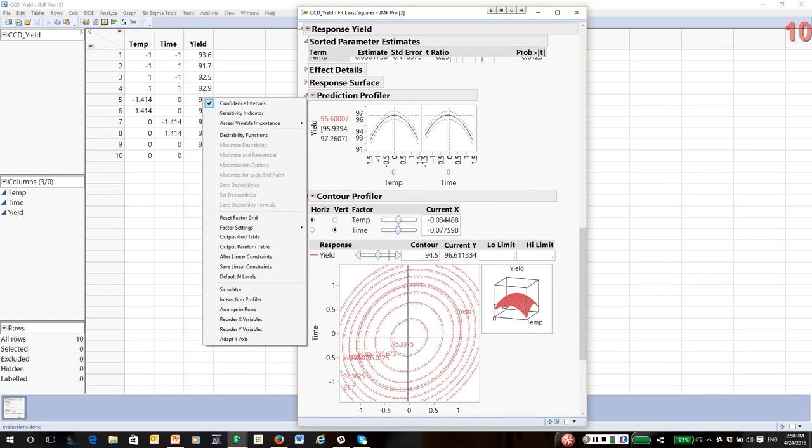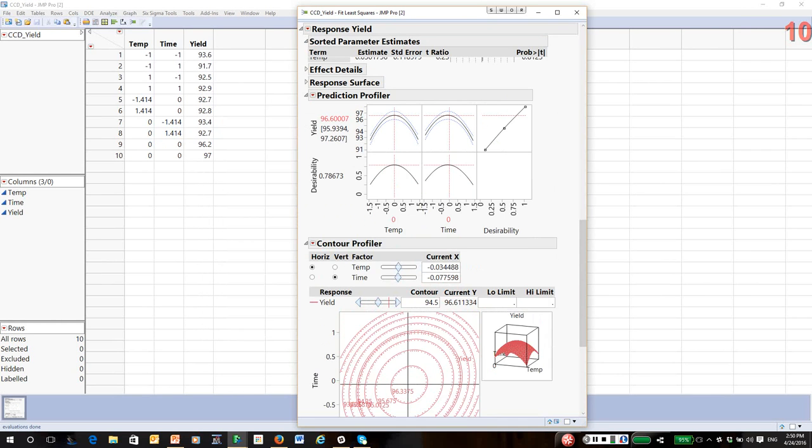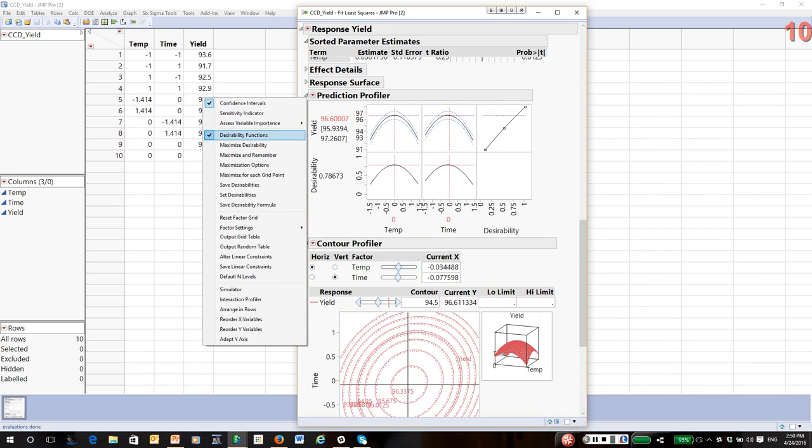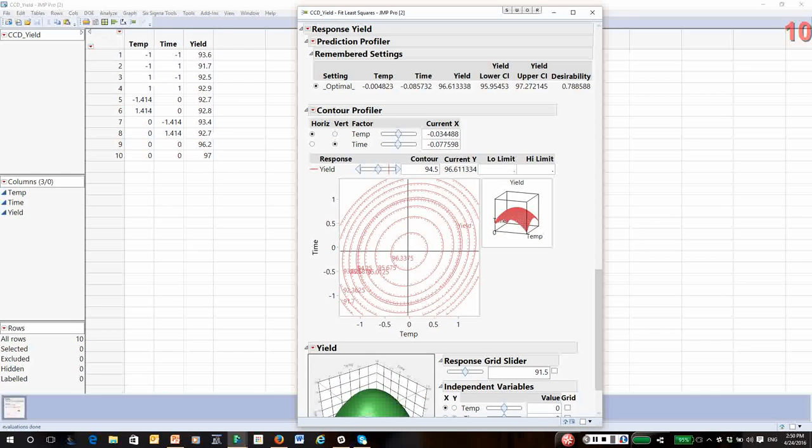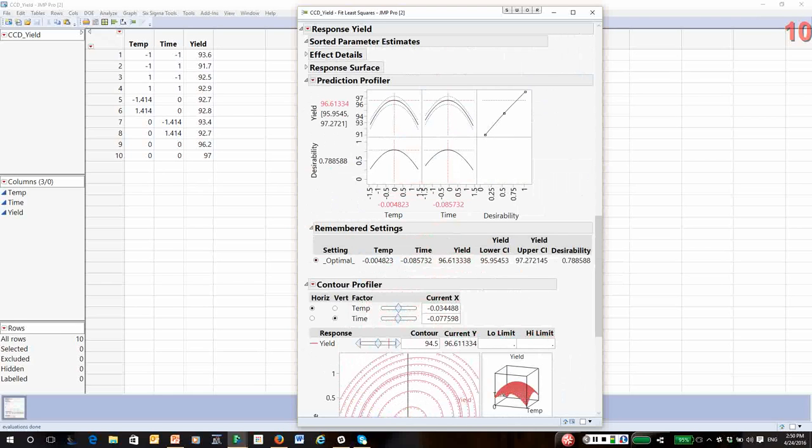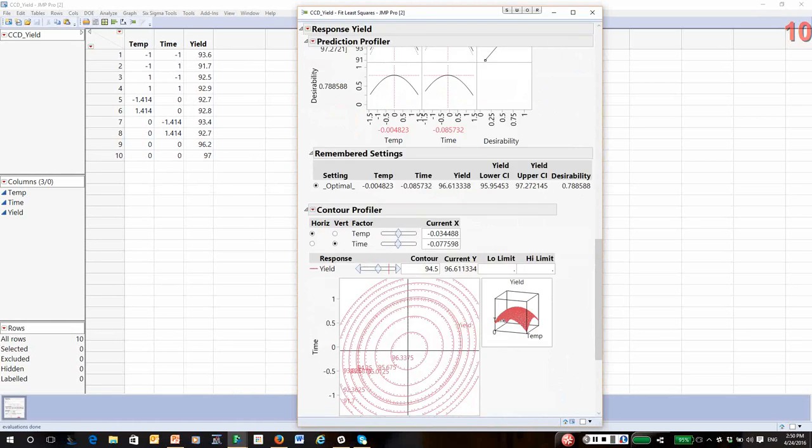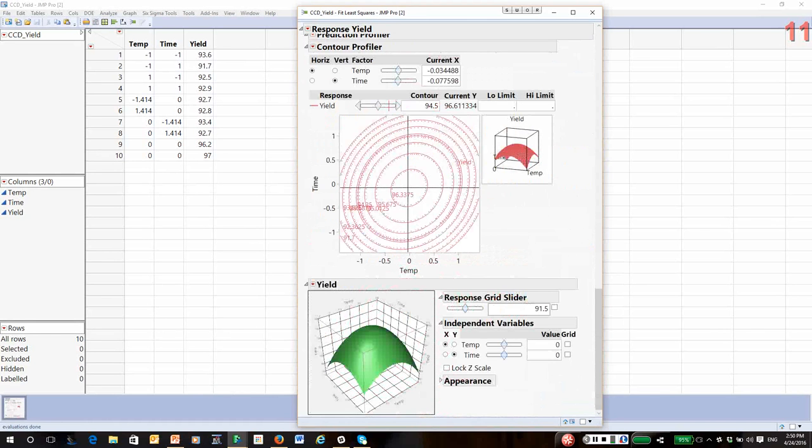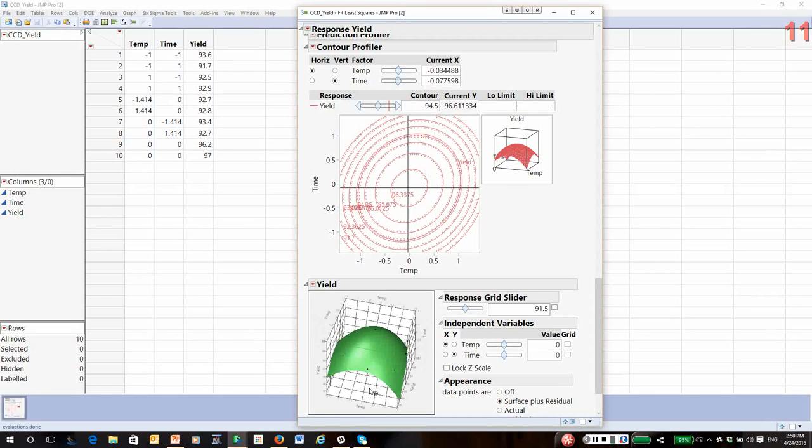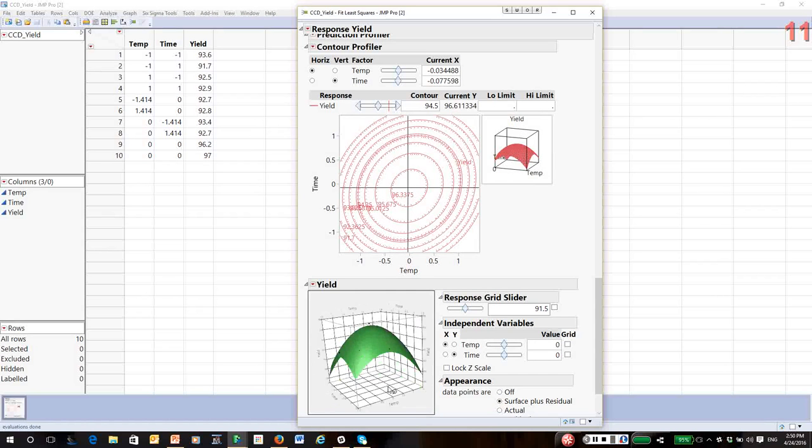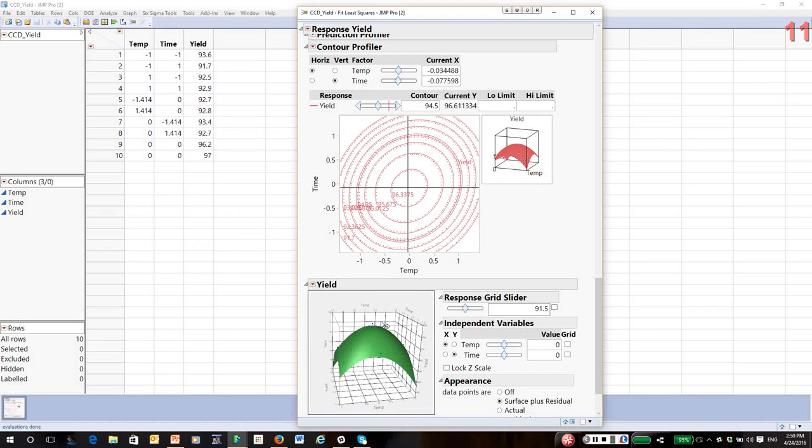Of course, we can still use desirability functions. We want to maximize yield, so maximize and remember. Indeed, you can see close to the center of the region is where we're getting our maximum yield. The 3D view is nice if you're trying to study the surface in some detail. From this, you can see the response surface is more or less mound-shaped and symmetric with a nice maximum sitting in the middle. So if you wanted to optimize yield for this process, you'd run at the recommended settings of time and temperature.